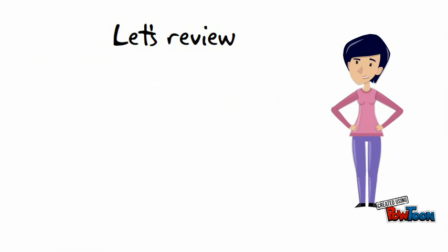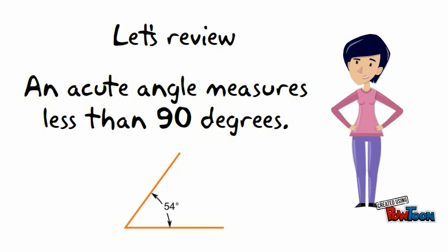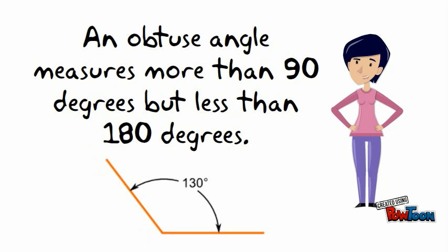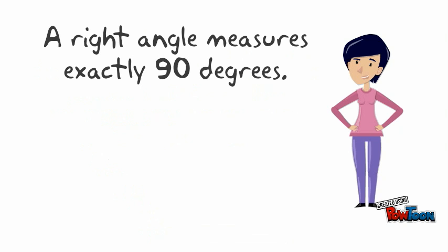Let's review. An acute angle measures less than 90 degrees. An obtuse angle measures more than 90 degrees, but less than 180 degrees. A right angle measures exactly 90 degrees.